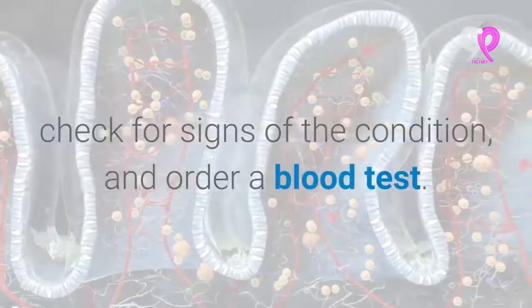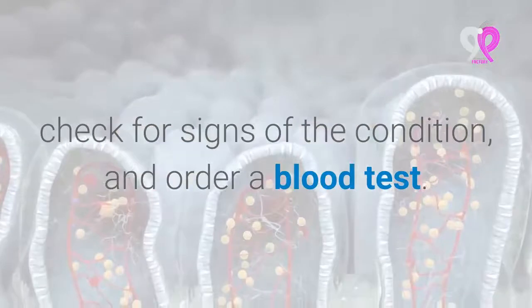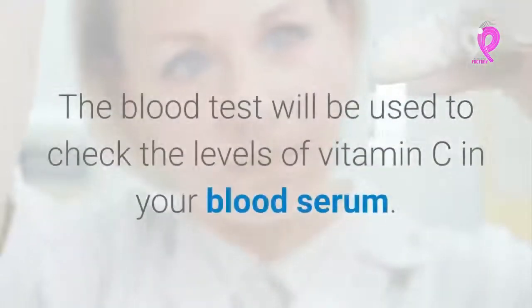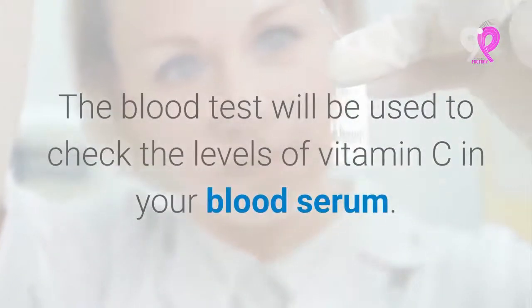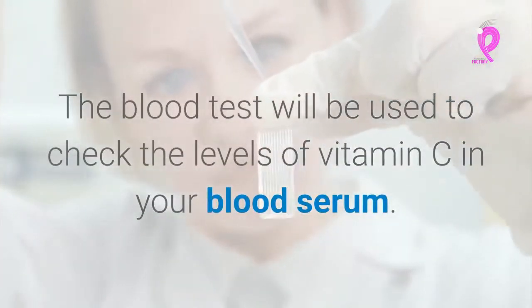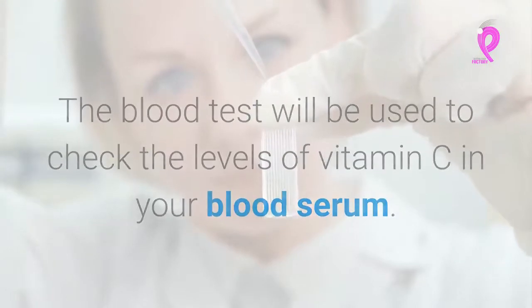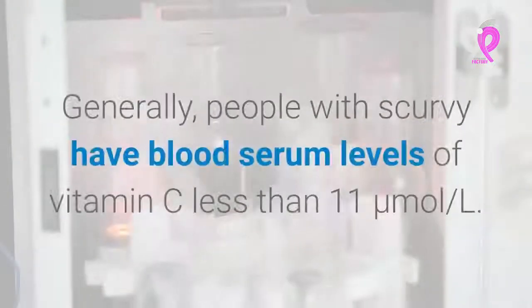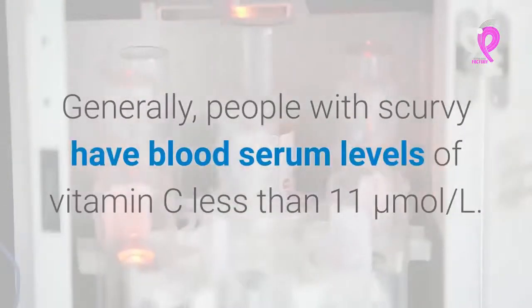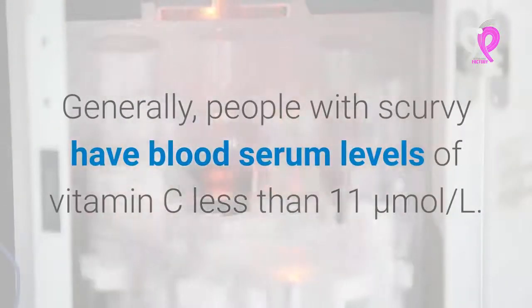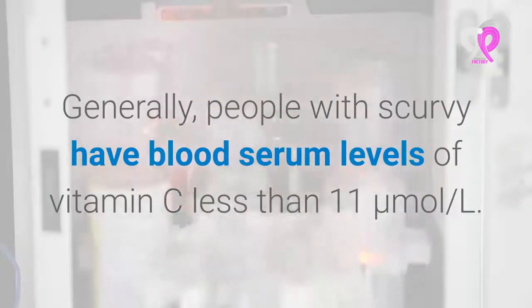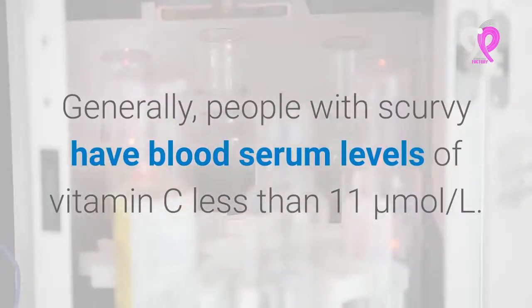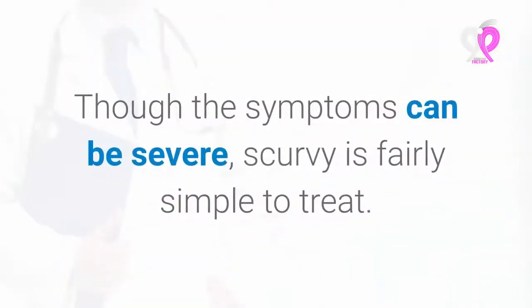If you suspect you have scurvy, your doctor will ask questions about your dietary history, check for signs of the condition, and order a blood test. The blood test checks the levels of vitamin C in your blood serum. Generally, people with scurvy have blood serum levels of vitamin C less than 11 micromoles per liter.